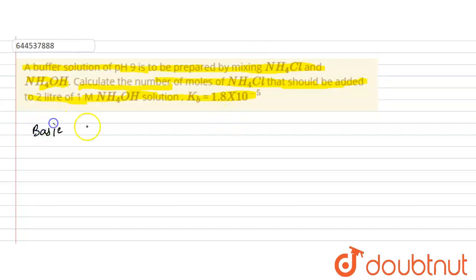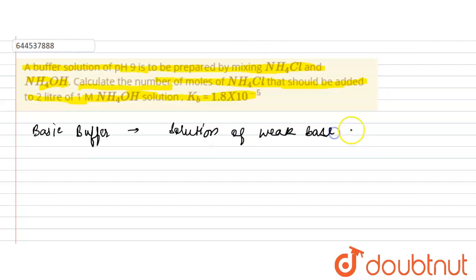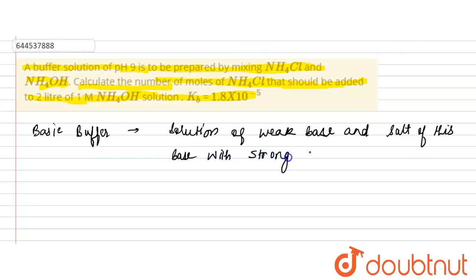First of all, this is a basic buffer. Why? Because it is a solution of a weak base and the salt of that weak base with a strong acid. NH4OH is a weak base, and NH4Cl is a salt of this weak base with a strong acid, HCl. So this is an example of a basic buffer.